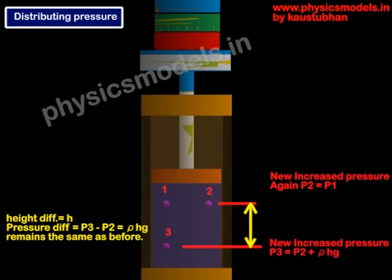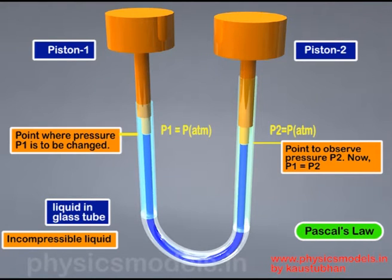p3 is still p2 plus ρhg, because the liquid column doesn't go away — it still bears down with its weight on point three. Similarly, p1 is still equal to p2. The differences between the various points one, two, and three are still the same as they were before. What Pascal's Law tells us is that as the pressure is increased, it distributes uniformly — the values of the pressures all become new values, but the differences remain the same.